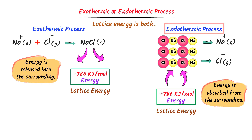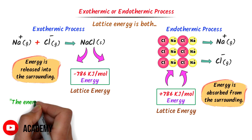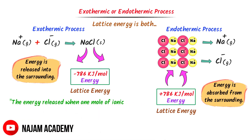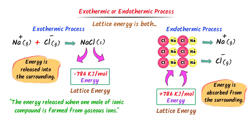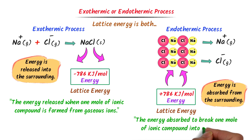Therefore, remember that lattice energy is endothermic as well as exothermic. The sign of lattice energy is both positive and negative — remember this very important point. Lattice energy is the energy released when one mole of ionic compound is formed from gaseous ions, or lattice energy is the energy absorbed to break one mole of ionic compound into gaseous ions. Remember these two definitions of lattice energy.